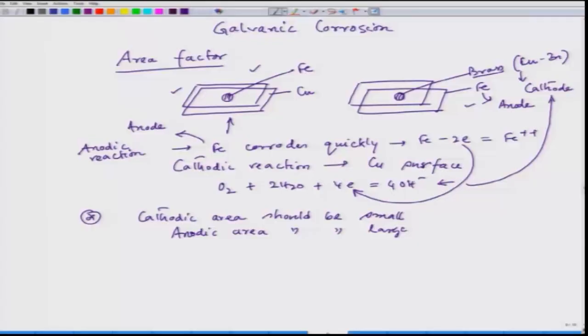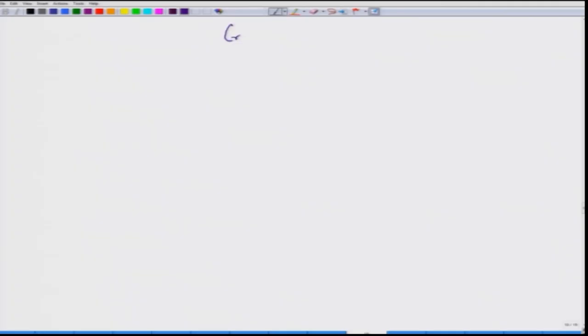This particular galvanic corrosion topic will again be touched upon when we complete the explanation on mixed potential theory. Now, let us go to another form of corrosion which is called crevice corrosion.